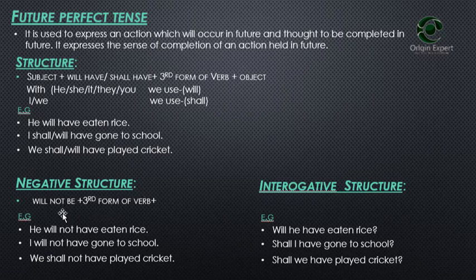For the negative structure, add 'not' after 'will' or 'shall': will not have / shall not have + third form of the verb. For example: You will not have eaten rice. I will not have gone to school. We shall not have played cricket.